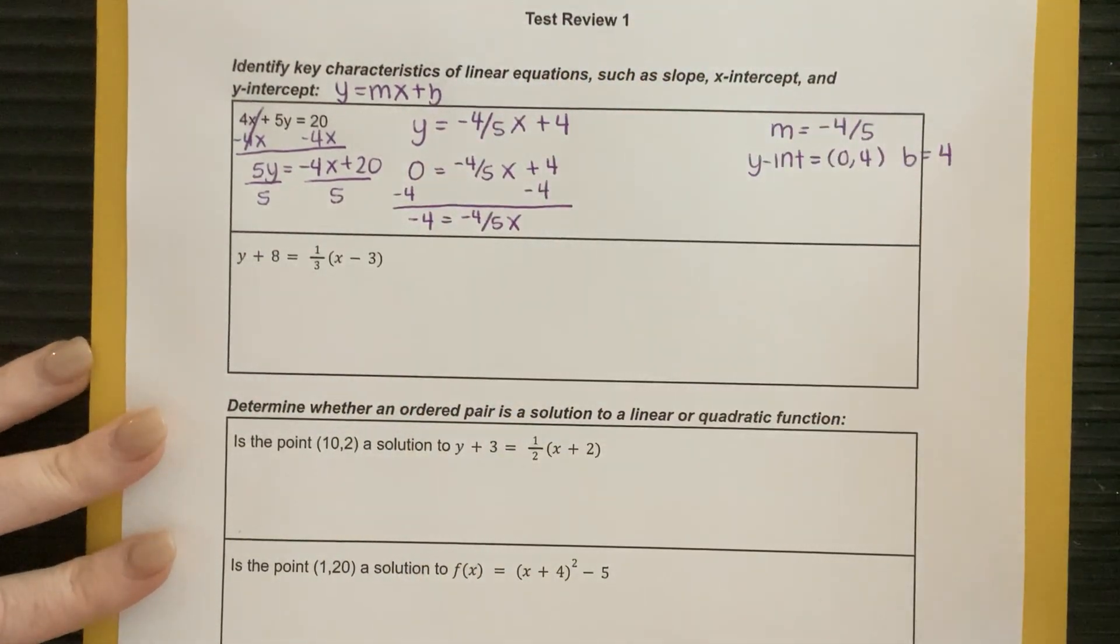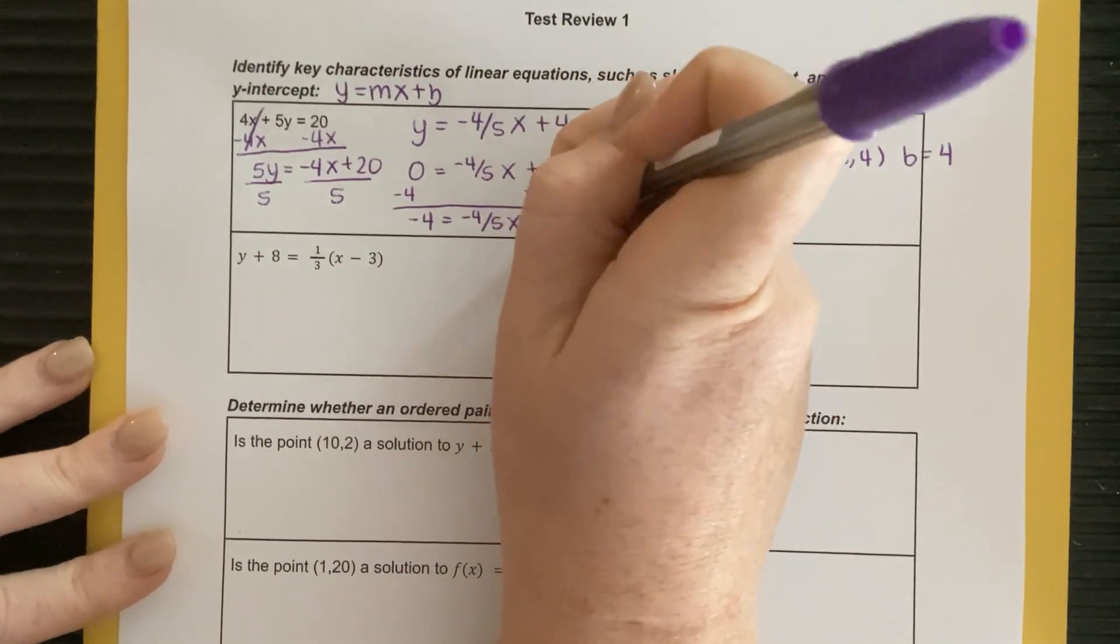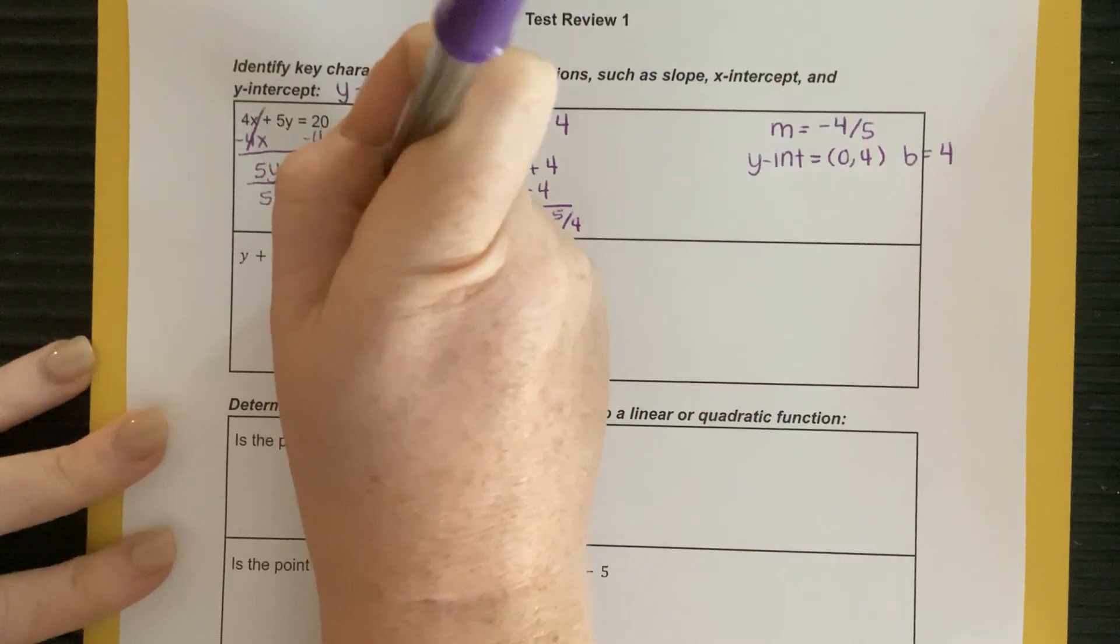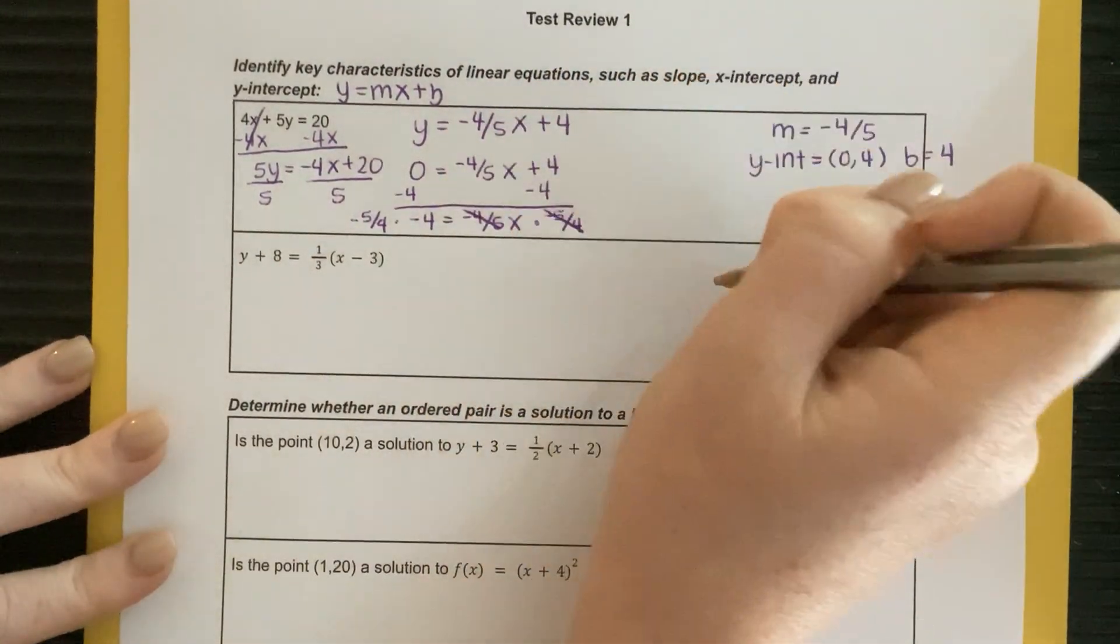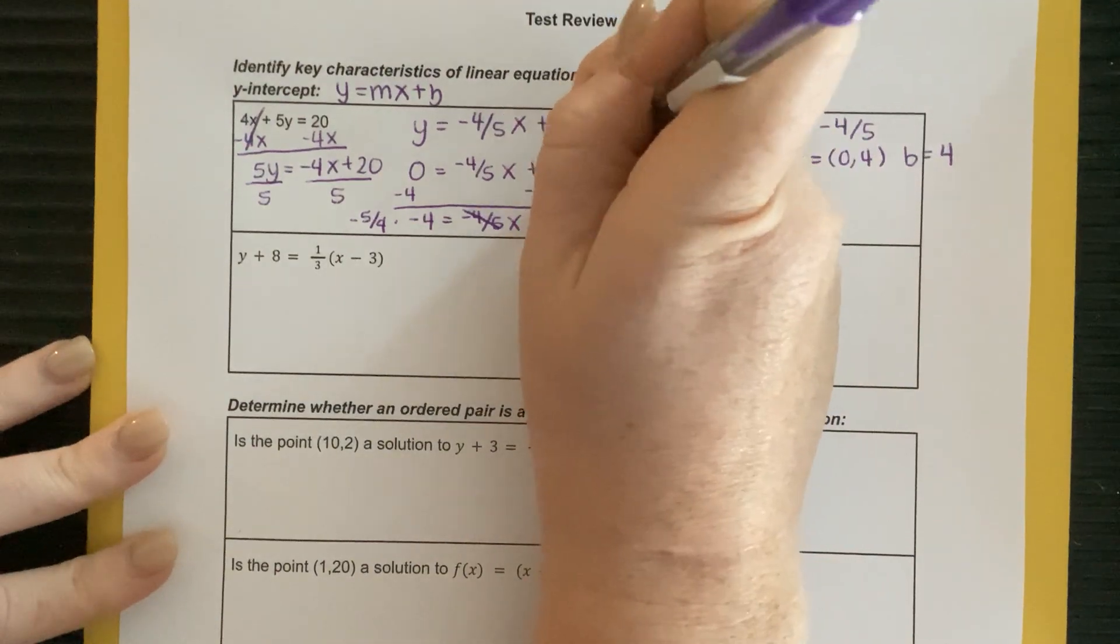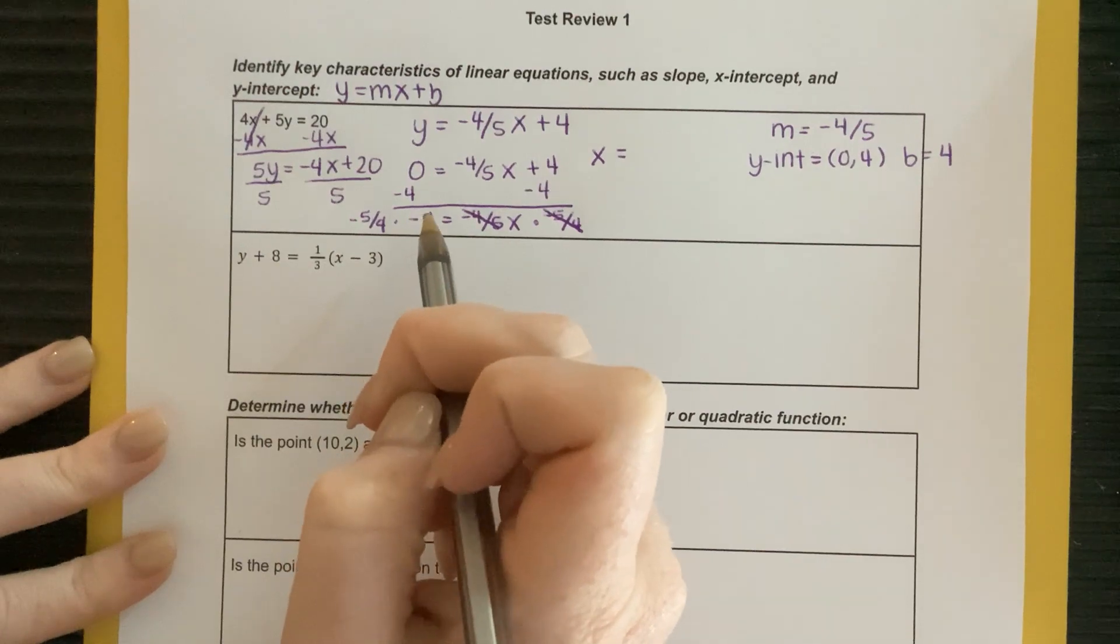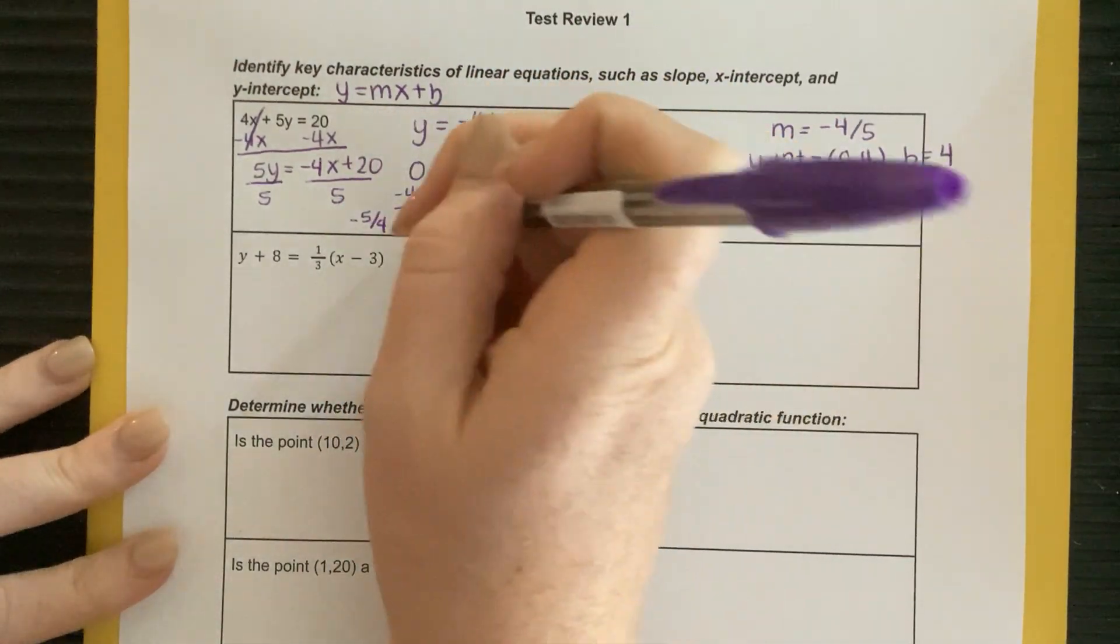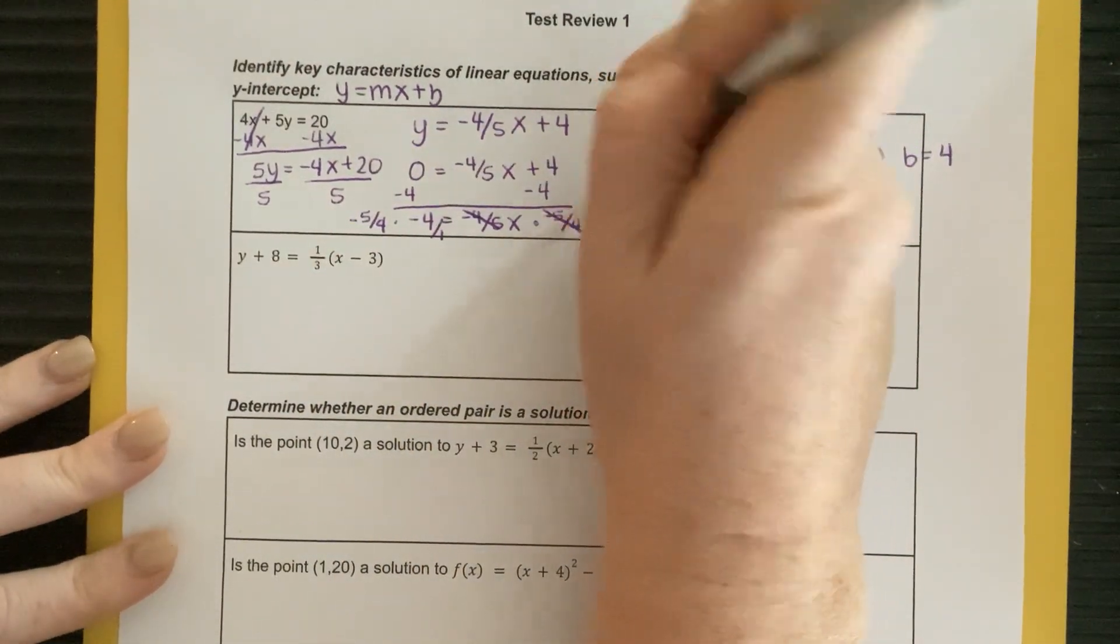In order to get rid of a fraction, I need to multiply by the reciprocal. So I'm going to multiply by negative 5 over 4, multiply by negative 5 over 4. It's going to cancel on this side, and I'm going to be left with x is equal to negative times a negative. It's going to give me a positive. All right? Those 4s, this is like having 4 over 1. So that 4 over 1 and this 5 over 4, the 4s are going to cancel, and I'm just going to be left with 5.